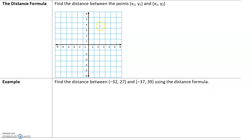Now let's say we have arbitrary points (x₁, y₁) and (x₂, y₂). In class, we will find a formula for the distance between these two points and use that formula going forward. Because if you try to graph big numbers like (-32, 27) or (-37, 39) on a coordinate plane, it's really hard, so we will use the distance formula we derive in class.